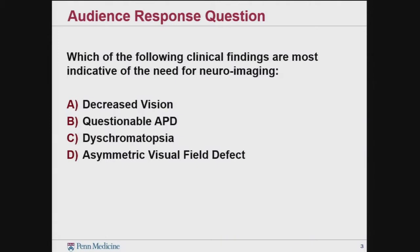My first slide is an audience response question: which of the following clinical findings are most indicative of the need for neuroimaging? We have decreased vision, a questionable APD, dyschromatopsia, or an asymmetric visual field defect.